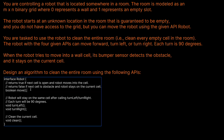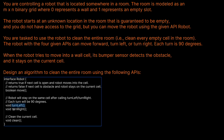The robot has four APIs: it can move forward, turn left, or turn right — each turn is 90 degrees. When the robot tries to move into a wall cell, its bumper sensor detects the obstacle and it stays on the current cell. The move method returns true if the next cell is open and the robot moves into it, and false if it's an obstacle. The robot also has a clean method which cleans the current cell.